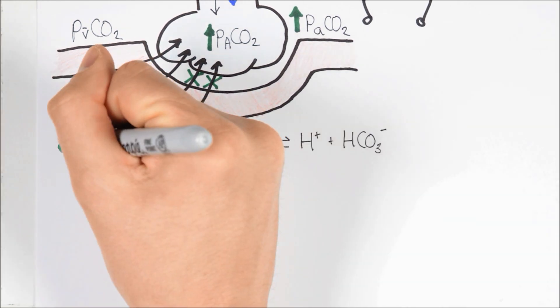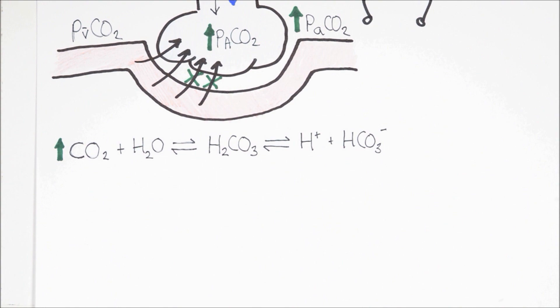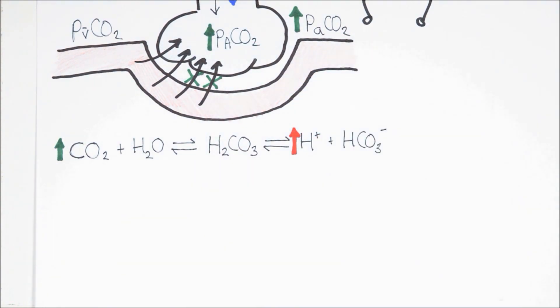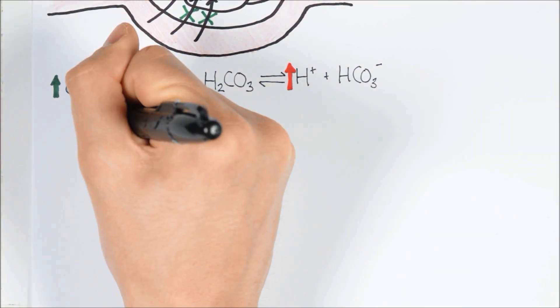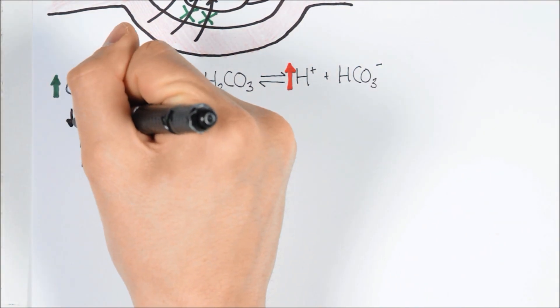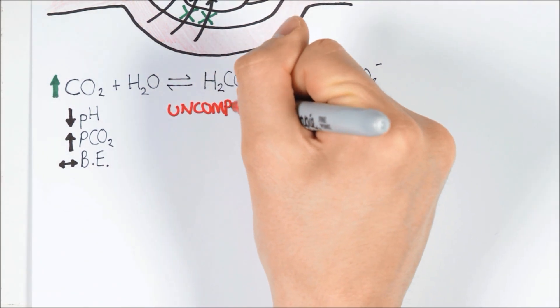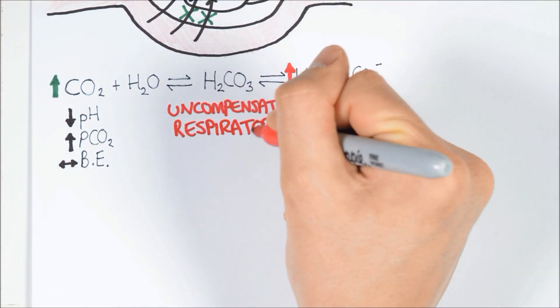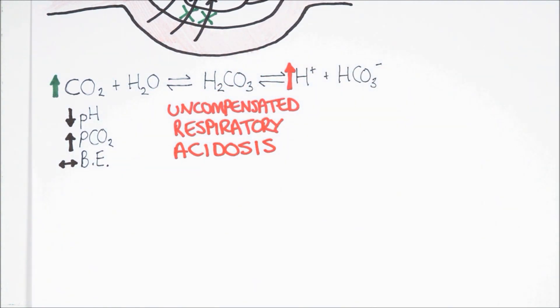In this case, increased CO2 promotes the rightward reaction, which results in an excess accumulation of protons. So if we did an arterial blood gas, we'd see a lower than normal pH, a higher than normal PCO2, and a normal base excess. This is because the bicarbonate concentration is correct for the PCO2. These findings would indicate that the patient is in a state of uncompensated respiratory acidosis.